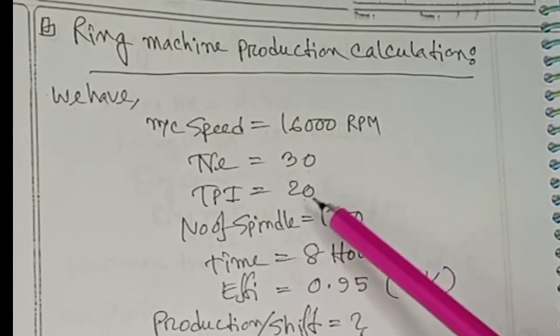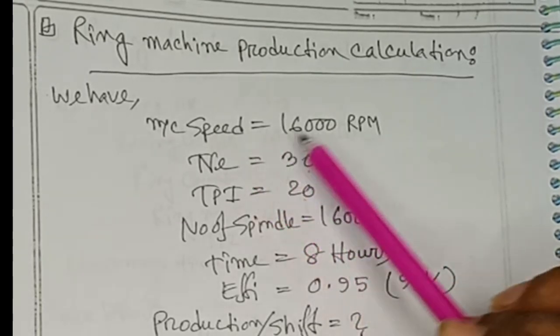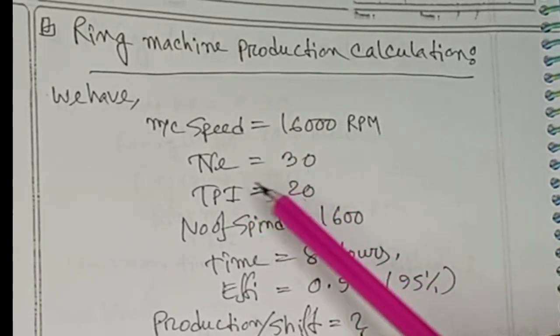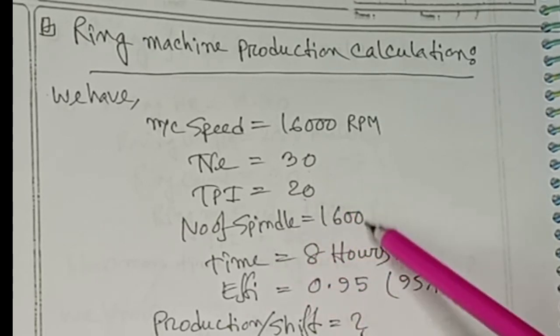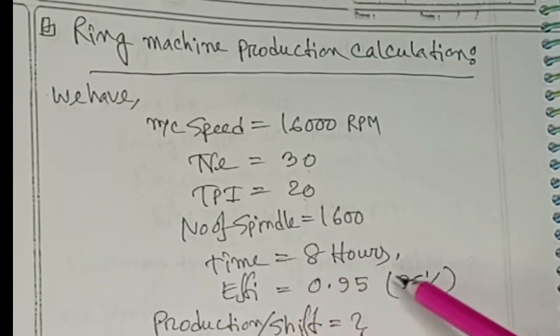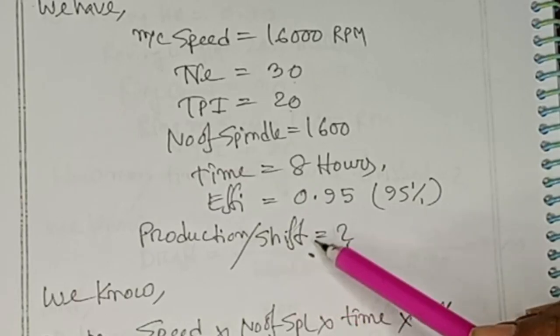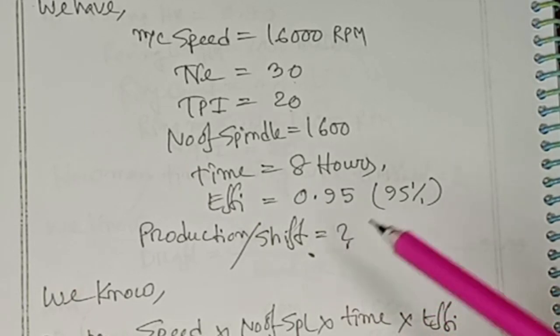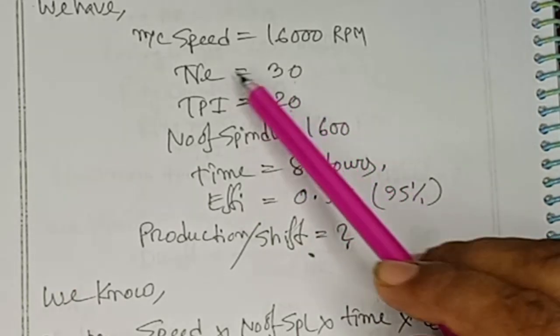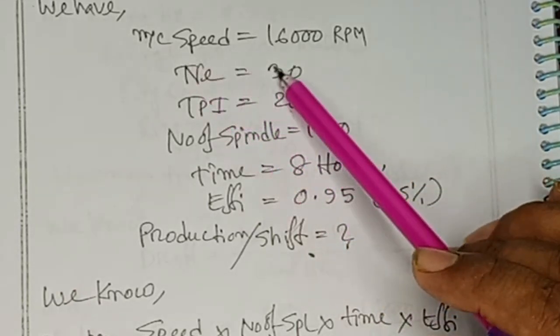We need some data such as machine speed, number of count, TPI, number of spindles, time, efficiency, etc. Then we will convert the production per shift, per day, etc. I'll include that machine speed equals 16